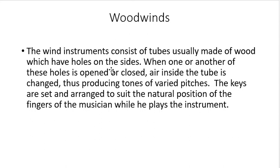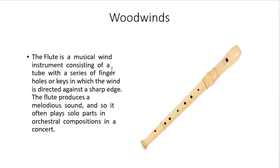Let's now proceed to the woodwinds. The woodwind instrument consists of tubes, usually made of wood, which have holes on the side. When one or another of these holes is opened or closed, the air inside the tube is changed, thus producing tones of varied pitches. The keys are arranged to suit the natural position of the fingers of the musician. A good example of a woodwind instrument is the flute — a musical wind instrument consisting of a tube with a series of finger holes or keys in which the wind is directed against a sharp edge. The flute produces a melodious sound and often plays a solo part in orchestral compositions.